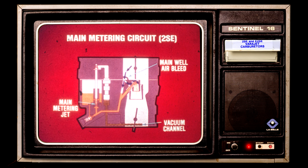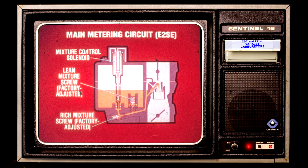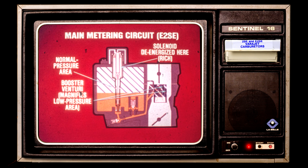The E2SE main metering circuit differs due to the mixture control solenoid — instead of a main metering rod and jet, and in addition to the lean mixture screw, there is also a rich mixture screw. The mixture control solenoid is the big difference; otherwise the E2SE main metering circuit utilizes the same principles as the 2SE.